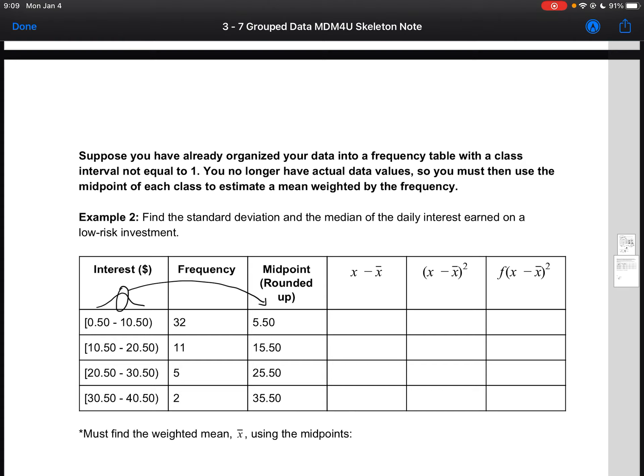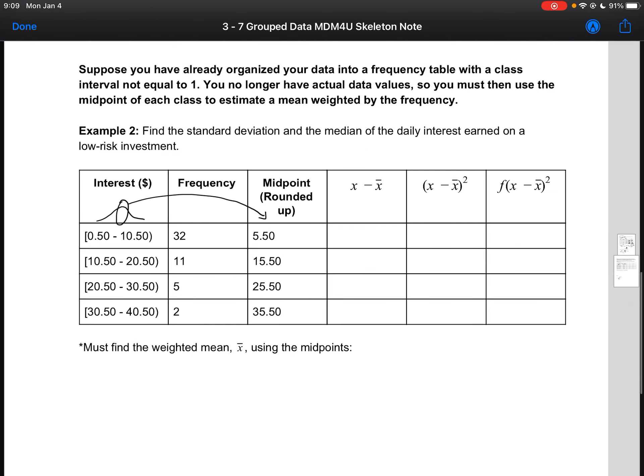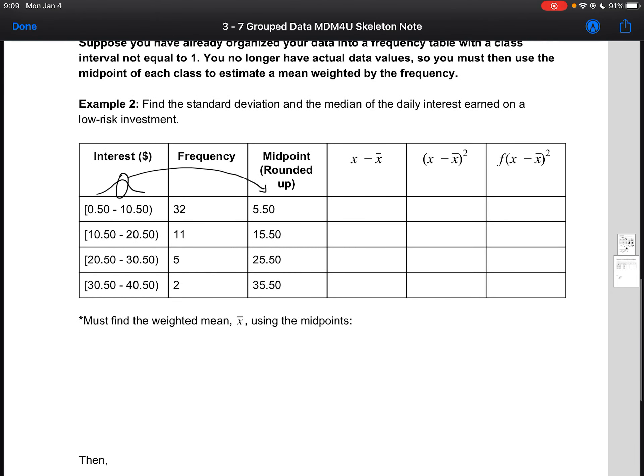So class interval that's not equal to 1, you are going to use the midpoint to calculate your weighted average, to calculate your deviations, to calculate your deviation squared, and allow you to finish the question. So just like in example 1, our first step is to find the weighted mean using the midpoints. So the approach is exactly the same as before.